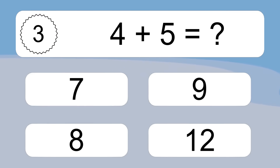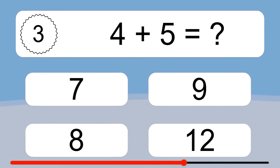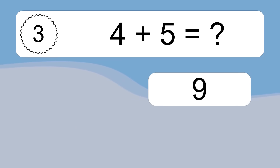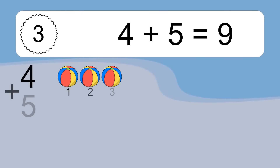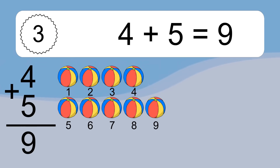4 plus 5 equals what? 4 plus 5 equals 9. Let's count it: 1, 2, 3, 4, 5, 6, 7, 8, 9.